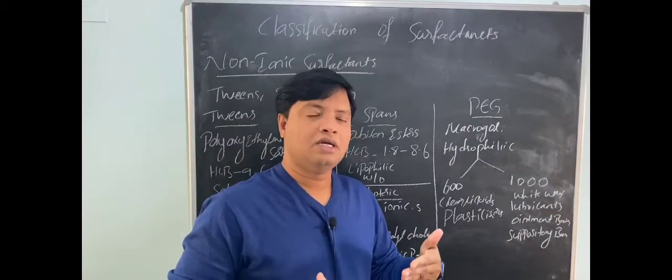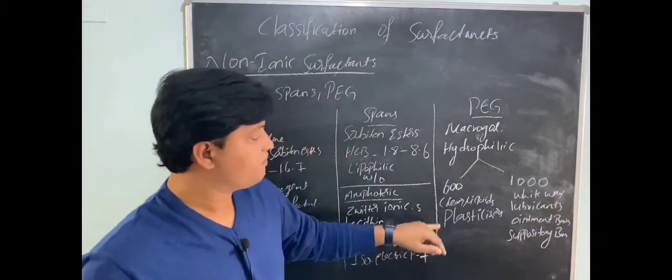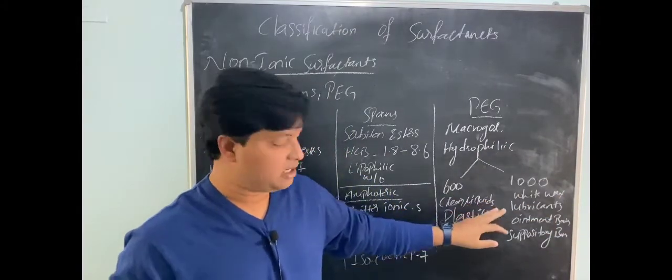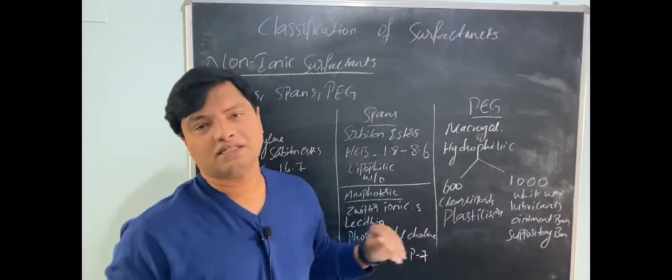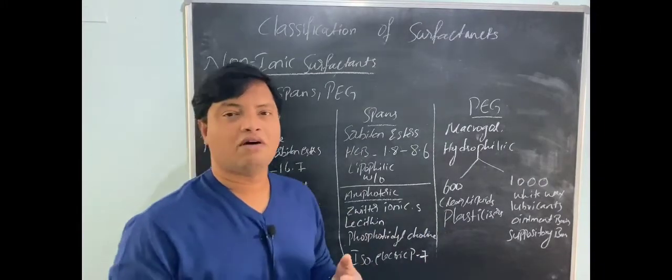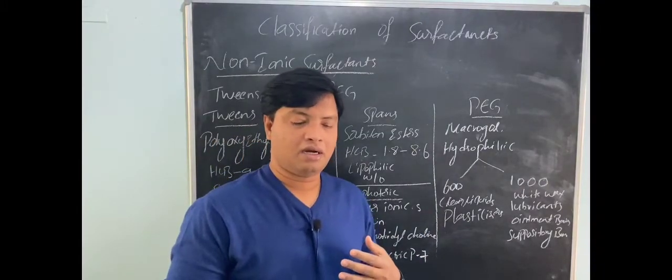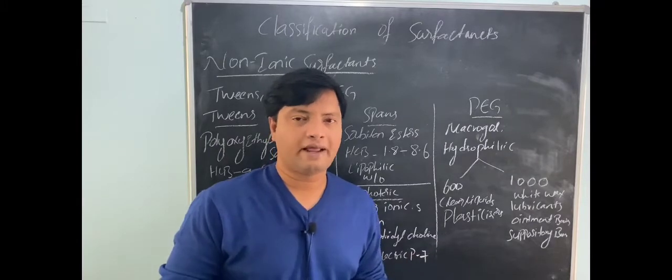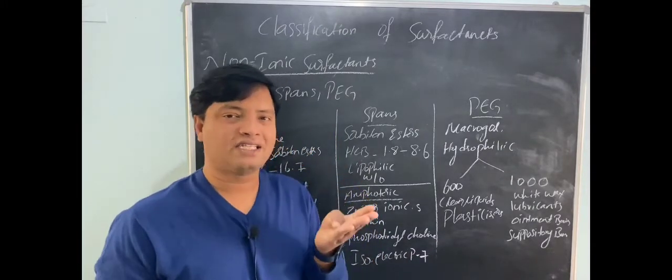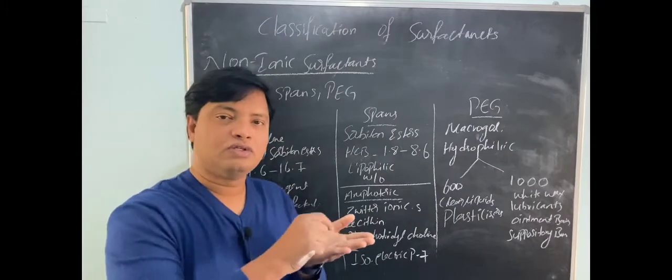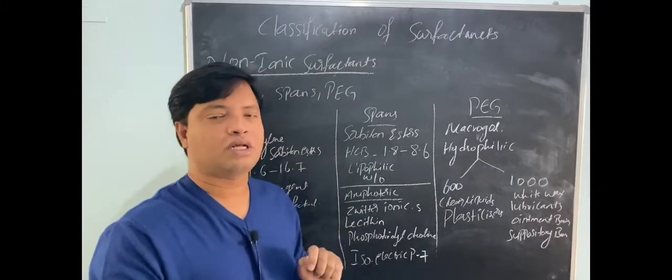PEG 600 are clear liquids. They are used as plasticizers in coating of tablets, or if you want to prepare patches. In patches also we use plasticizers to give strength to that patch.